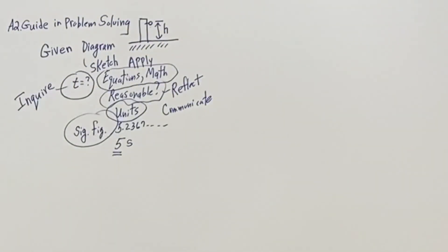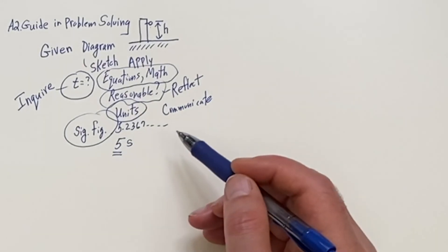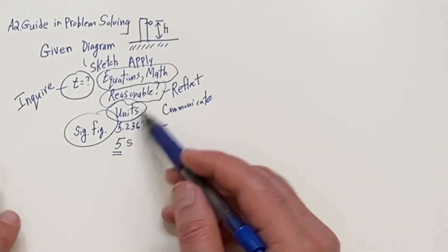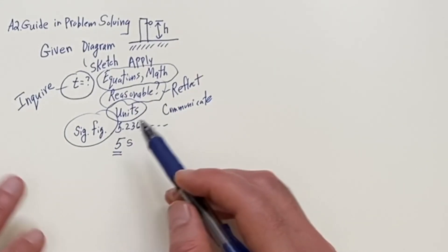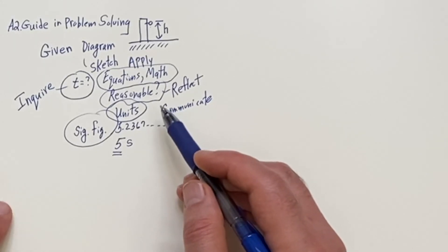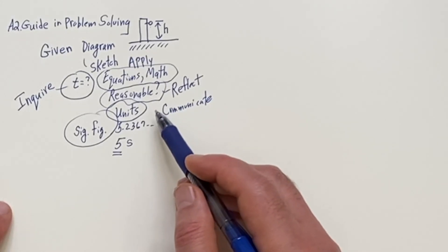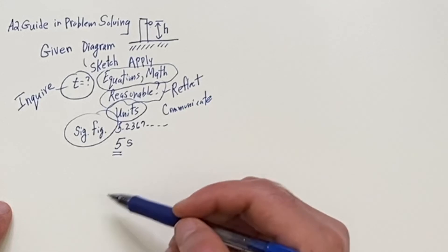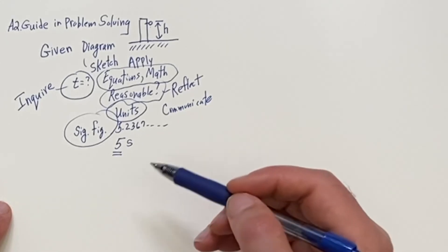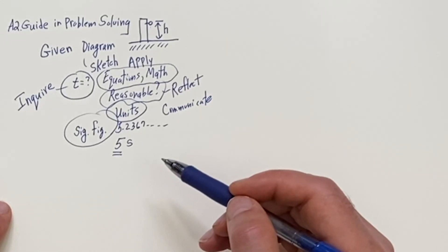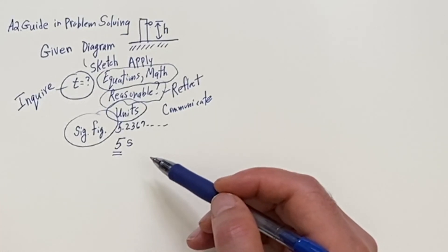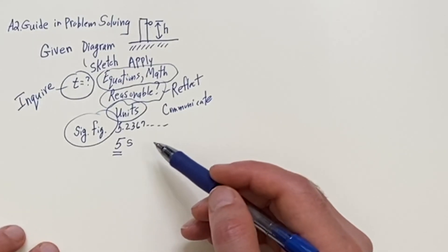So that's the general idea of how to approach problem solving. This is our first chapter, so we're covering general concepts. Then we'll get into the details of physics, different formulas, and different topics from class to class. We'll see you next time.